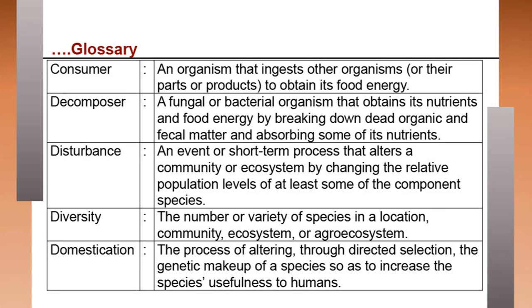Disturbance is an event or short-term process that alters a community or ecosystem by changing the relative population levels of at least some component species. Diversity is the number or variety of species in a location, community, ecosystem or agroecosystem. Domestication is the process of altering, through directed selection, the genetic makeup of a species so as to increase its usefulness to humans — when a wild species is brought from its wild habitat and selections are made.